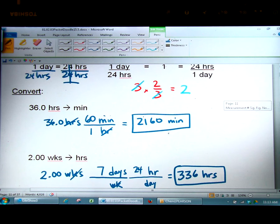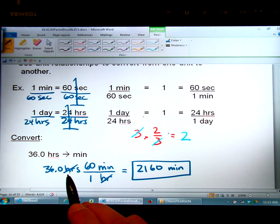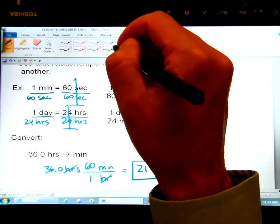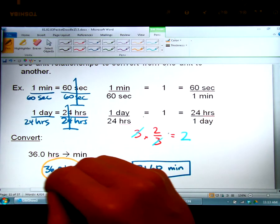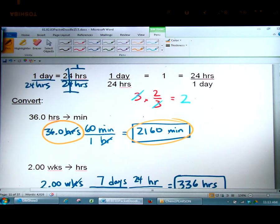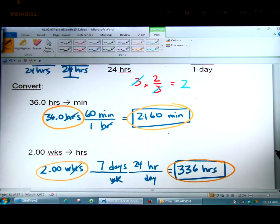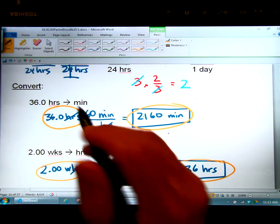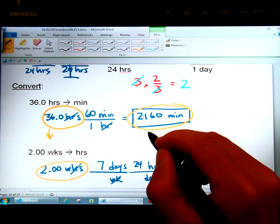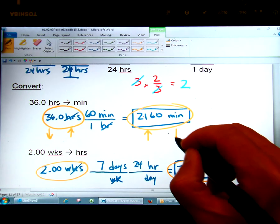Let's review one more thing about this. The whole point of this is to convert between one number and unit to an equivalent number and unit. And so what we realize is that 36 hours is the exact same thing as 2160 minutes. And two weeks is exactly the same thing as 336 hours. And what also makes sense is that the number 36 is smaller than the number 2160, but the unit of hours is bigger than the unit of minutes.